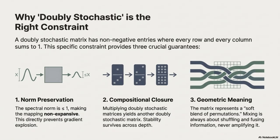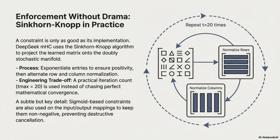They use the Sinkhorn-NOP algorithm to enforce the doubly stochastic constraint. You exponentiate the entries to make them positive, then alternate normalizing rows and columns until convergence. They made a smart engineering trade-off: a max of 20 iterations instead of chasing perfect precision. They also use sigmoid-based constraints on the input and output mappings to keep them non-negative, preventing destructive cancellation where big positive and negative numbers fight each other and amplify numerical noise globally.